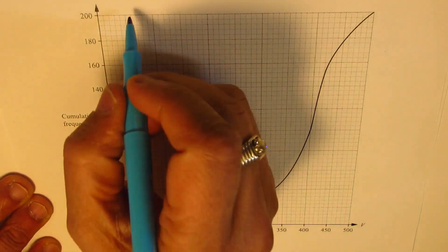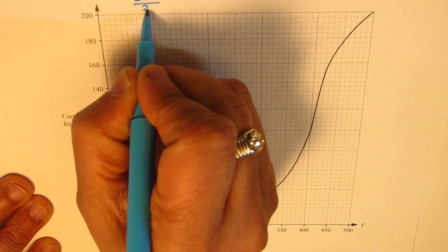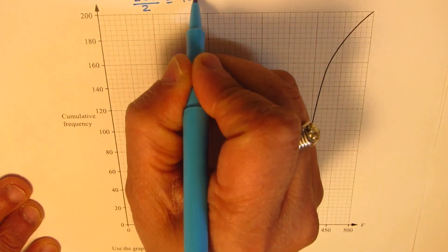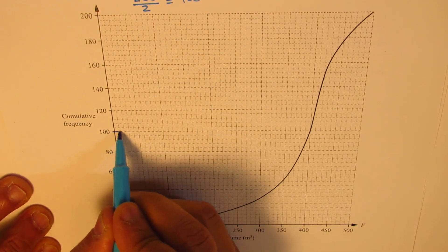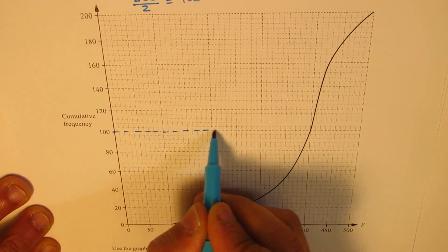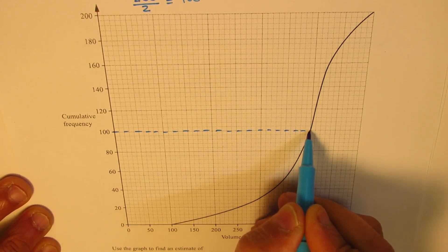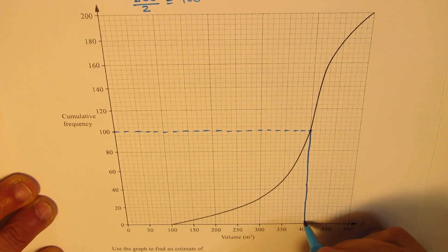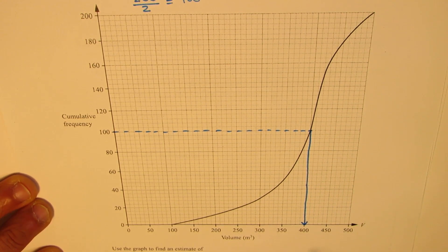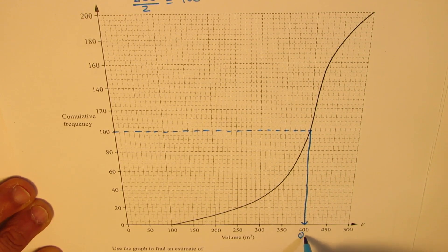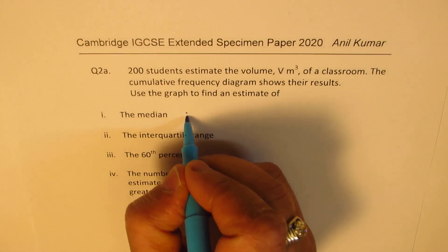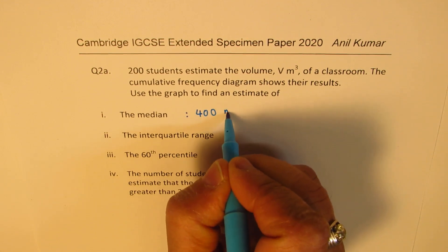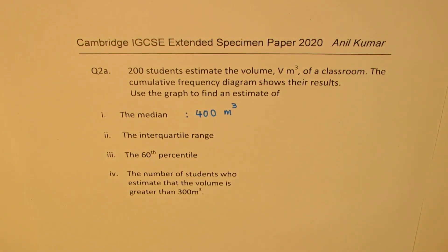Since there are 200 students, we do 200 divided by 2, which is 50% — so the 100th student. For the 100th student, the volume estimate of the room corresponds to this point. When you go down on the horizontal x-axis, the volume indicates 400. So that becomes the median, which you can also call the second quartile. The median is 400 meter cube.